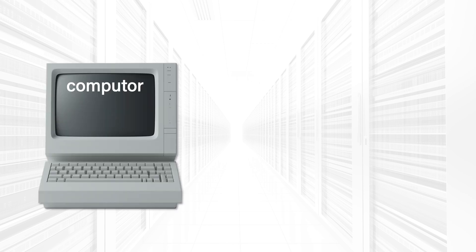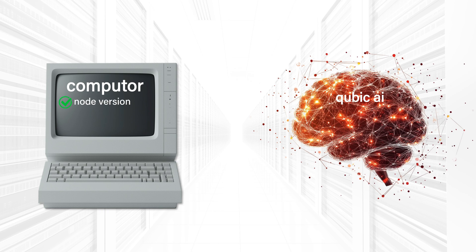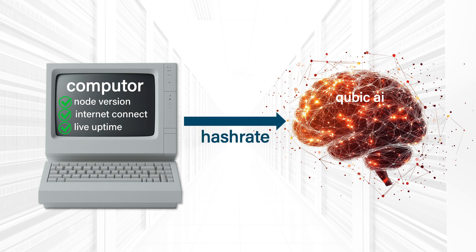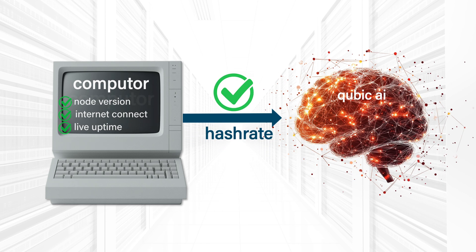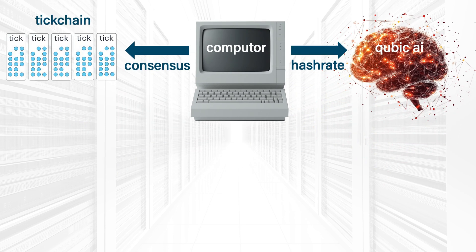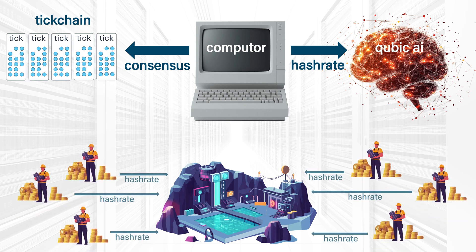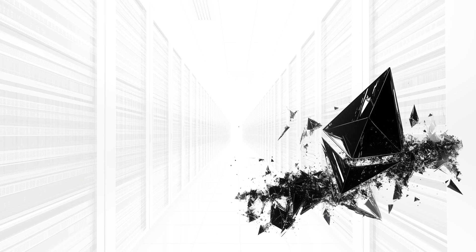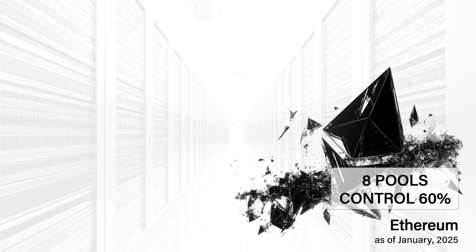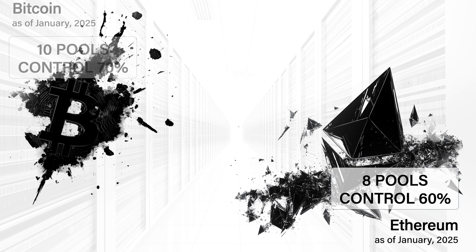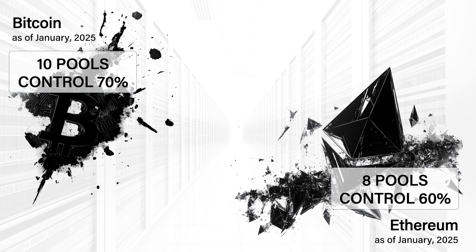All 676 quorum members must show uptime, current node software, and most importantly, they are responsible for contributing the mining hash rate to Cubic. This creates constant competition between the computers as the weakest members get replaced with better workers. Some computers run their own mining farms, but the majority have their own pools where anybody can join, provide their hash power for Cubic, and participate in a portion of computer Cubic coin rewards. Over 60% of Ethereum staking is concentrated in approximately 6 to 8 large pools, and around 5 to 10 large mining pools collectively control 60 to 70% of Bitcoin's total hash rate. Cubic is set up to have 676 pools.